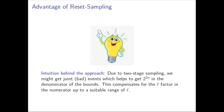The basic intuition behind the reset sampling approach is that we might get joint events in the bad events that yield 2^{2n} in the denominator of the bounds. So whatever L terms may appear in the numerator, we can get rid of them by exploiting the extra 2^n factor in the denominator. That was the basic intuition behind the reset sampling.